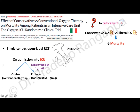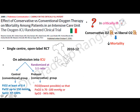The control (conventional/liberal) group received FiO2 of at least 0.40 with PaO2 maintained up to 150 mmHg and saturation target of 97–100 percent. The conservative protocol maintained FiO2 at the lowest possible level so that PaO2 was only 70–100 mmHg and saturation was 94–98 percent. Inclusion criteria were patients older than 18 years admitted to ICU with expected stay more than 72 hours.